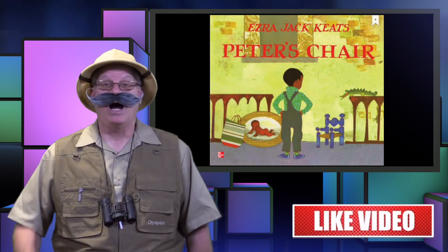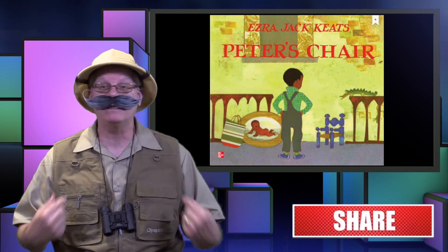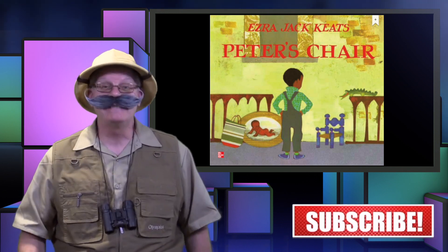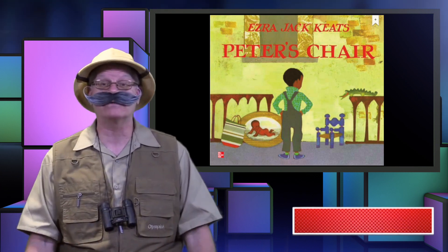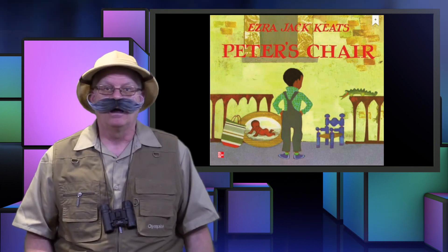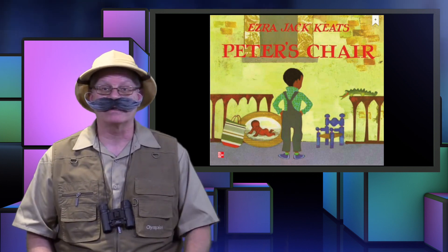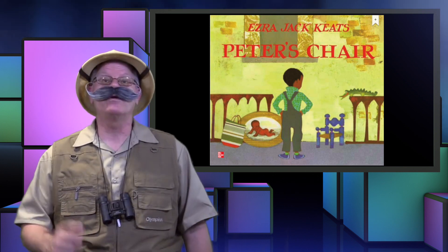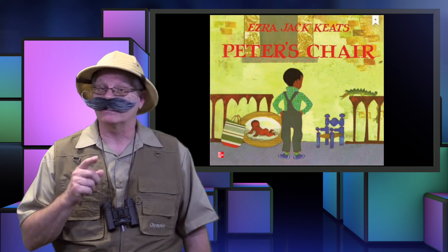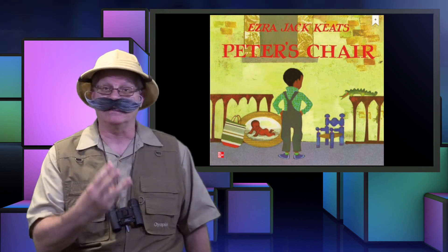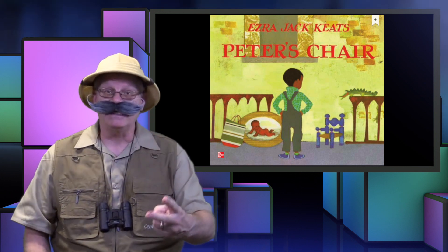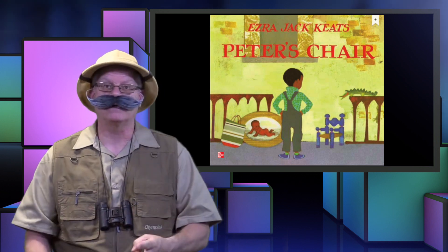Hi, Explorer. I'm glad you came back to read another book with me. Today, we're going to talk about a boy whose things are being painted pink. I want to talk to you about different parts that make up a story. Remember that a story is made up of three things: characters, setting, and events, or a plot.